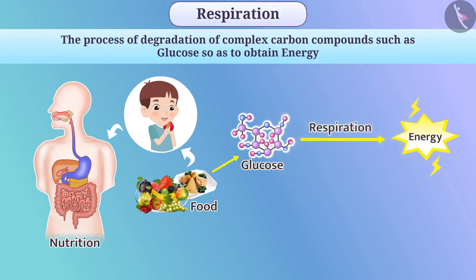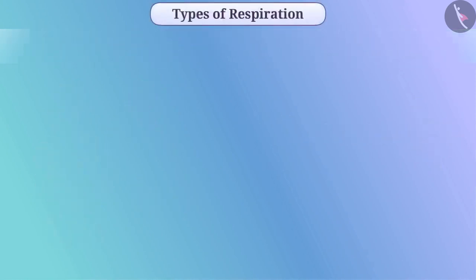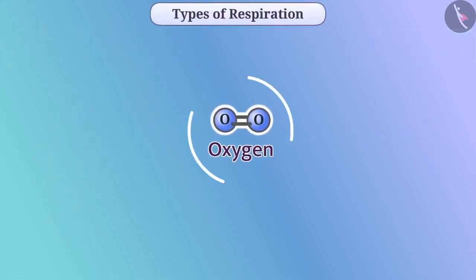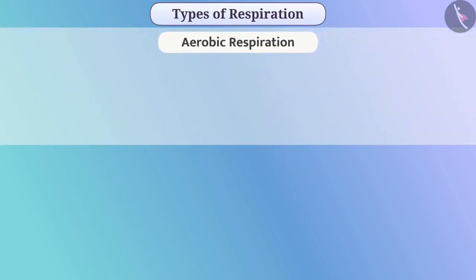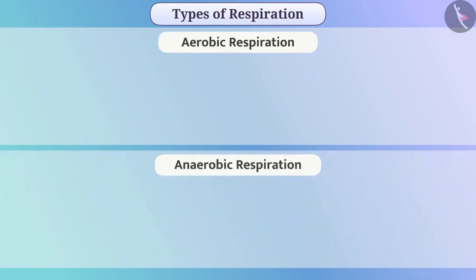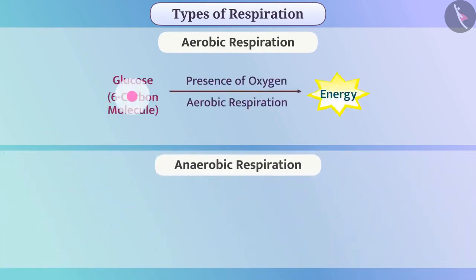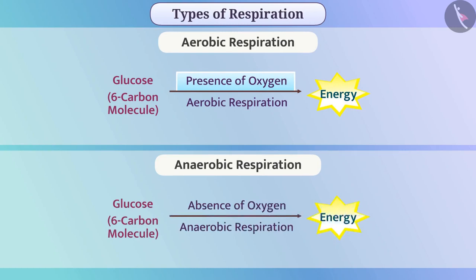Let's understand this process in detail. Depending on the need for oxygen, we can divide the process of respiration into two types: aerobic respiration and anaerobic respiration. In aerobic respiration, glucose is broken down completely into carbon dioxide and water in the presence of oxygen, and energy is obtained. In anaerobic respiration, glucose is broken down without using oxygen and energy is obtained.